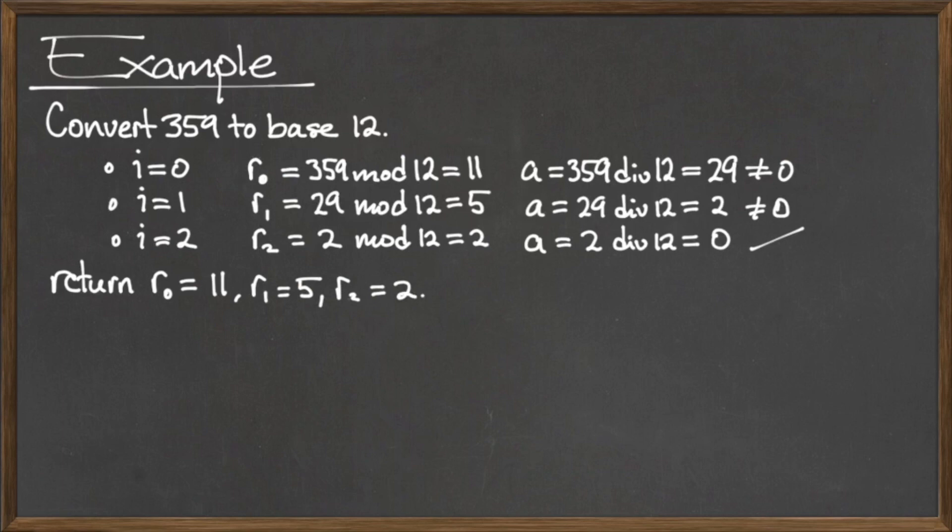So, this algorithm returns the numbers r sub 0 equals 11, r sub 1 equals 5, and r sub 2 equals 2.